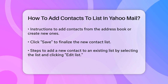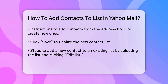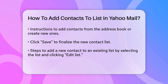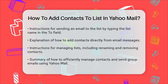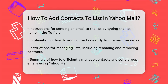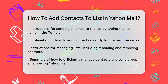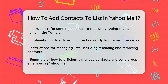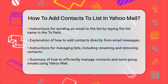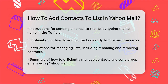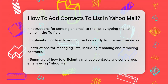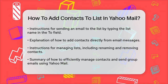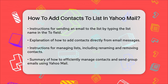You can also add contacts to your list directly from email messages. If you have an email from someone you want to add, open the email, hover over their name at the top of the message, and click Add to Contacts. Then you can add them to a specific list if you need to.